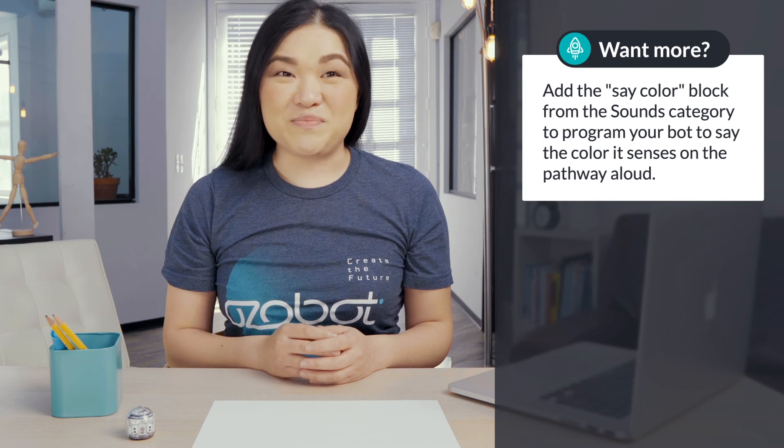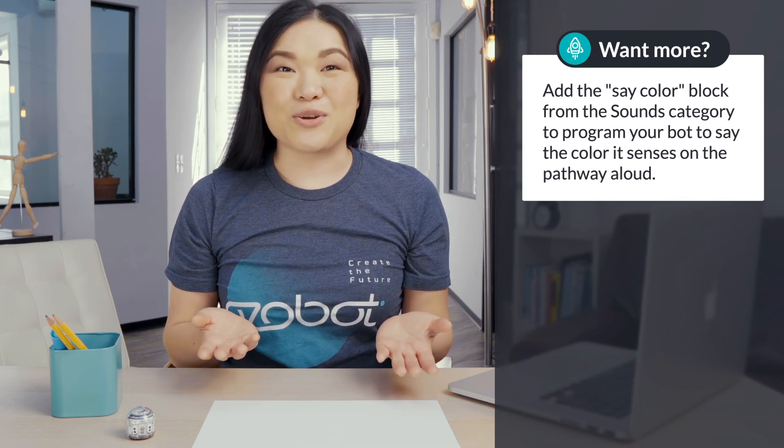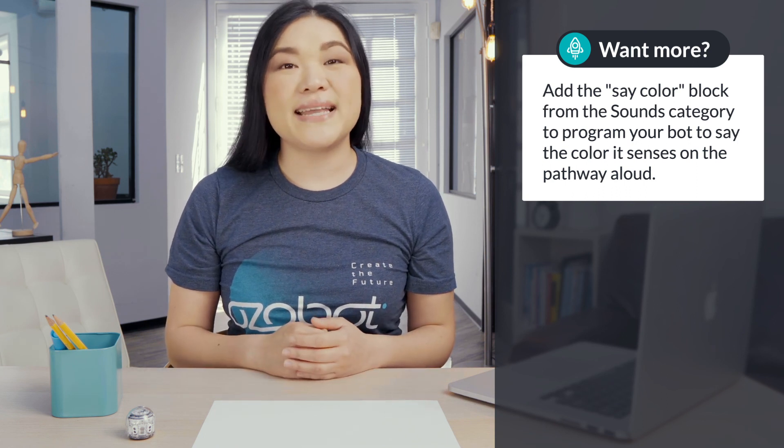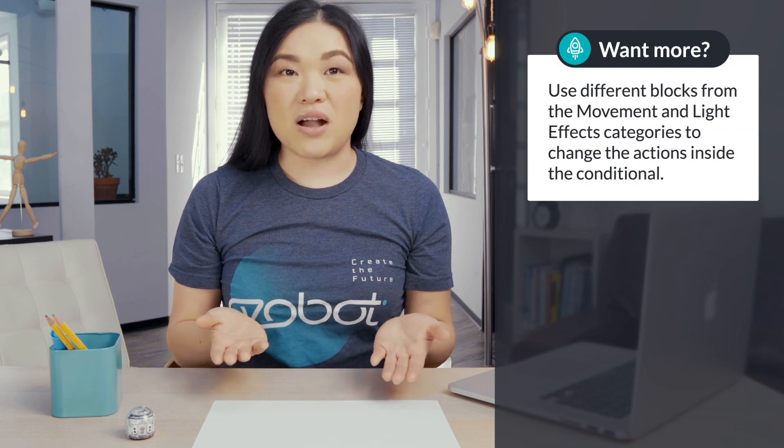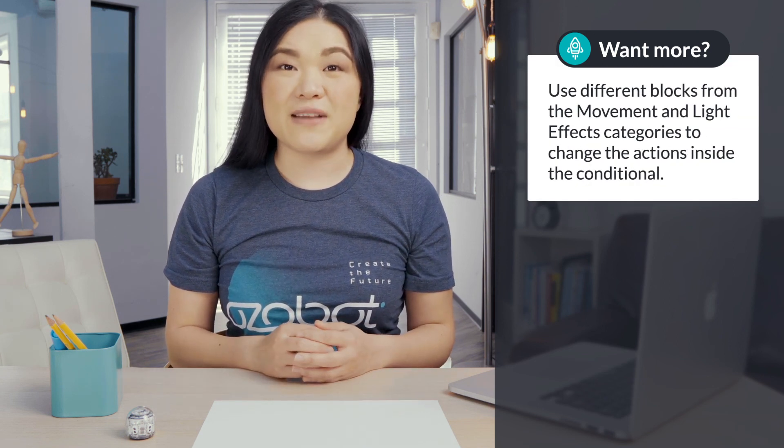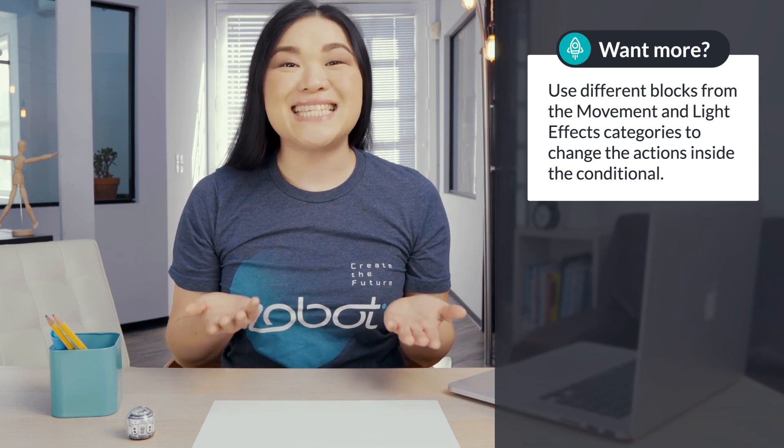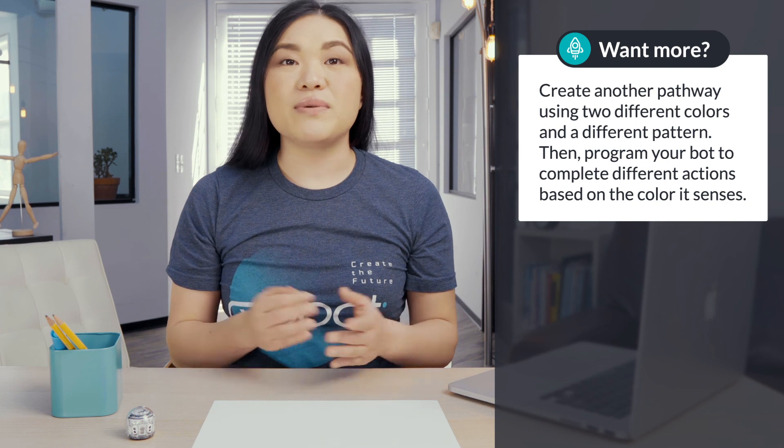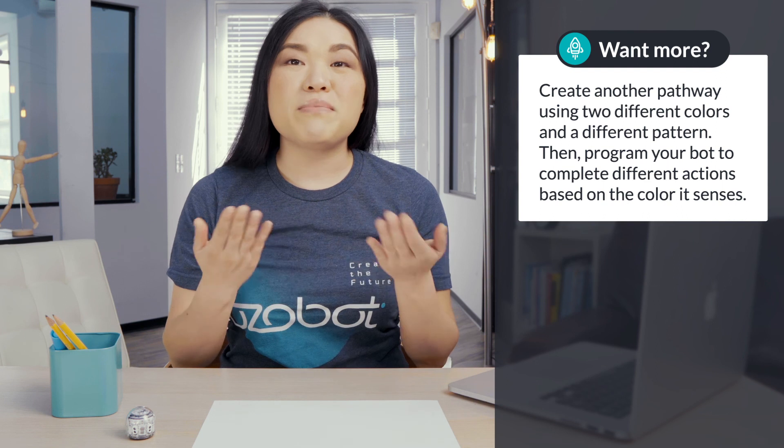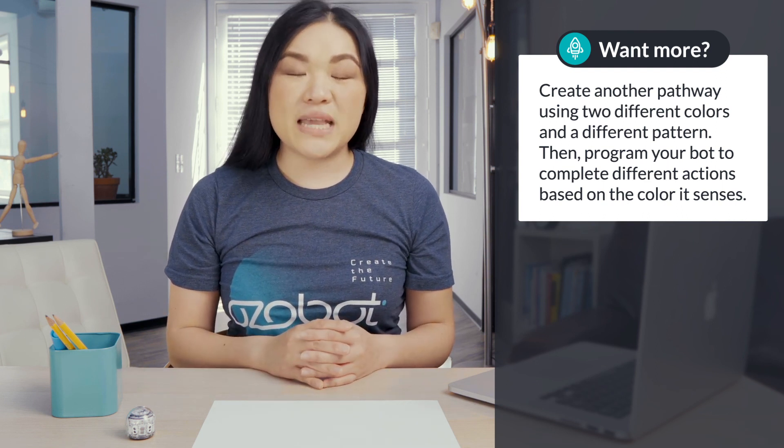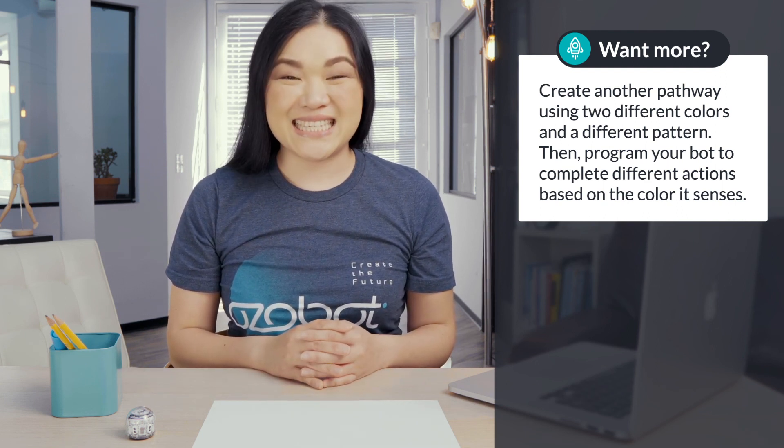If you're looking for more to do, you can add the say color block from the sounds category to program your bot to say the color it senses on the pathway aloud. Or you can use blocks from the movement and light effects categories to change the actions inside the conditional. Or create another pathway using two different colors and a different pattern. Then program your bot to complete different actions based on the color it senses. Come back again soon for our next lesson.